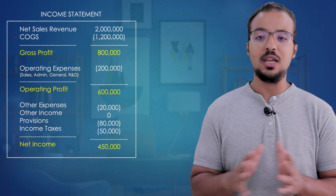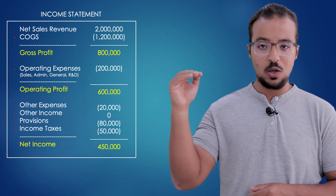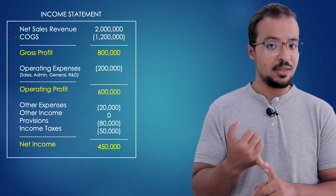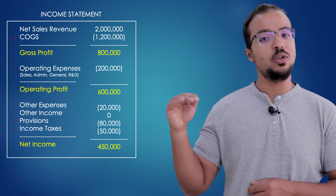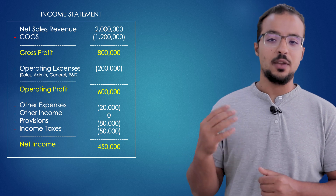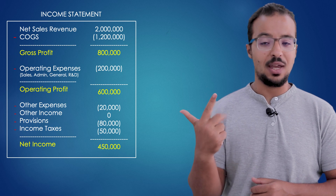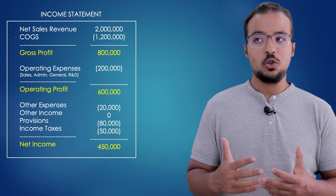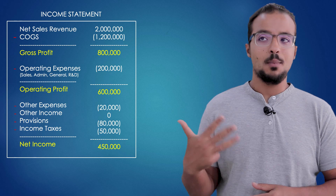If we look into the basic structure of any income statement, we have the sales revenue minus cost of goods sold, which equals the gross profit. Then we deduct operating expenses — this includes general and admin, sales, and R&D — and then we get the operating profit. Then we deduct provisions and income tax and we get to the net profit or net income. In the income statement there are three very important numbers: gross profit, operating profit, and net income. These numbers tell the company if it is profitable or not.